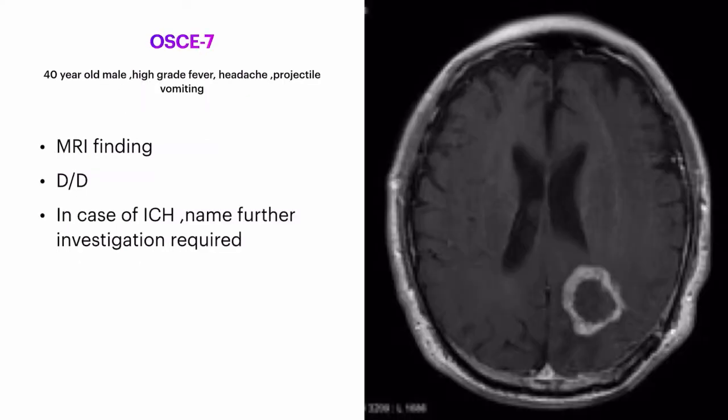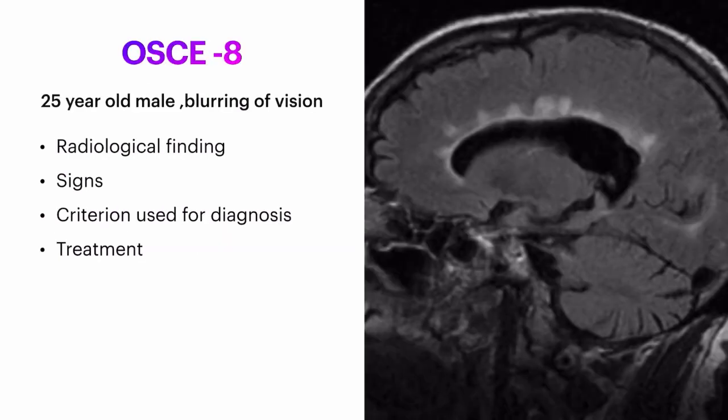Question seven: a 40-year-old male came with complaint of very high grade fever, headache, and projectile vomiting. The image is shown to you. Write down the findings, differential diagnosis of this case. If this patient is an immunocompromised host, name the further investigations required.